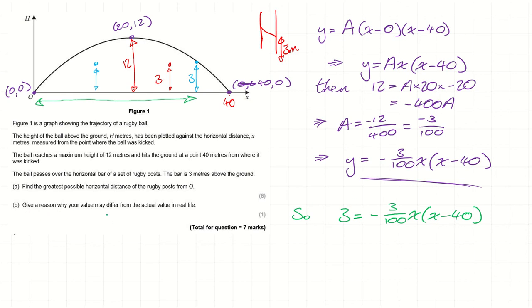Quick mention of part B: give a reason why your value might differ from the actual value in real life. Don't overcomplicate it — just think about things we haven't taken into account. For example: we haven't accounted for air resistance on the ball, wind, the spin of the ball, or the fact that the ball has a size and wouldn't pass through the bar as a point as we've imagined here. Any of those would get you a mark in an exam.